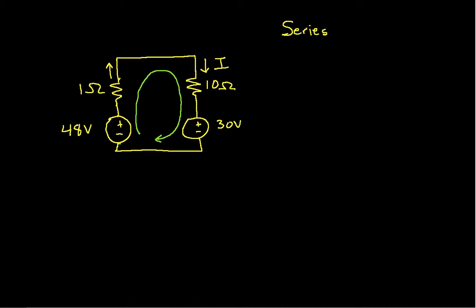The approach we're going to use is we'll apply Kirchhoff's voltage law around the loop that I've drawn here in green. Now to apply Kirchhoff's voltage law, we need to express the voltage across each resistor.